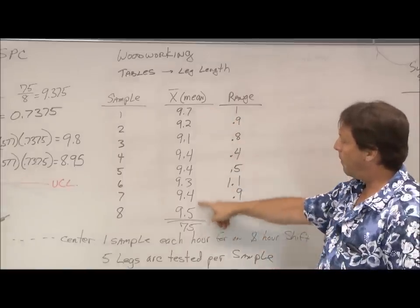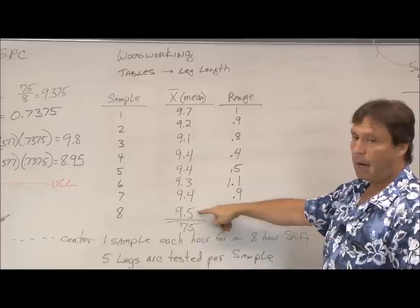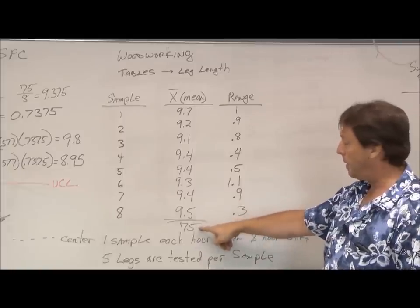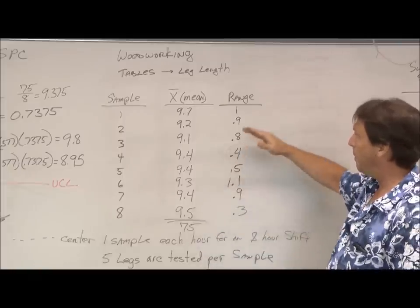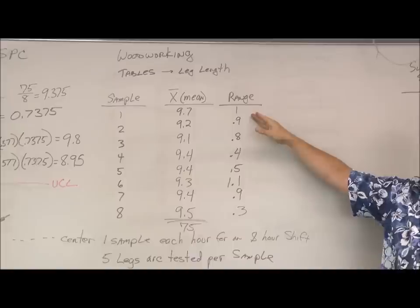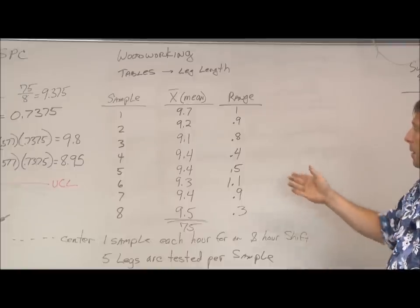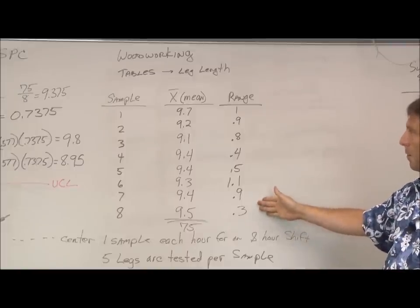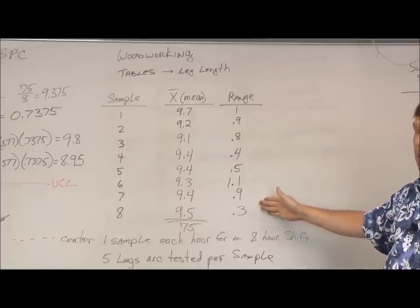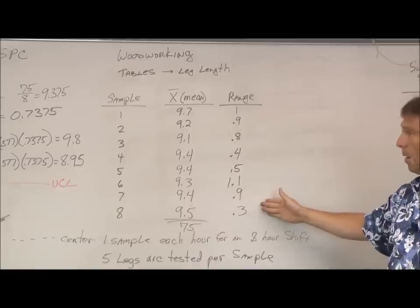So over our eight-hour shift, these were our eight means. We add them together at 75. We also take the range. The range is the difference between the smallest and the largest number. So that gives us a range over the eight hours of testing.